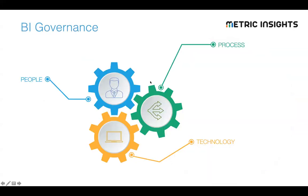Gartner has commented that through 2022, only 20% of organizations investing in information governance will succeed in scaling their initiatives across the enterprise. That means 80% of governance initiatives attempted are going to fail — and that's a staggering failure rate. It's not a big surprise because scaling governance initiatives beyond a small department, getting it to enterprise scale and generating ROI for your effort, is actually a very complex task.